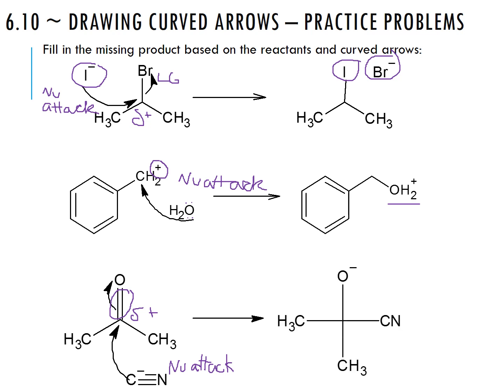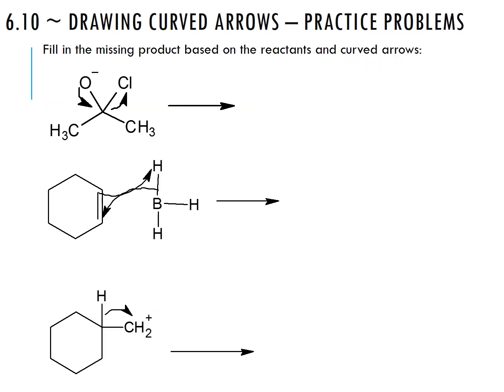The oxygen becomes negatively charged because it gained extra electrons. Remember, charge has to stay balanced: on the left we had one negative charge, and we still have one negative on the right; one positive stays positive; one negative stays negative. Keep that in mind as you're drawing these structures to keep your charges balanced.